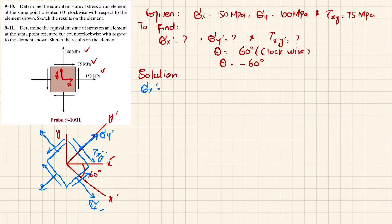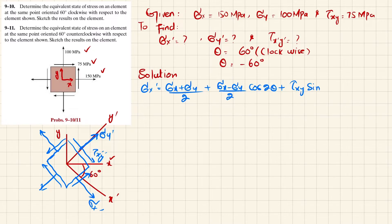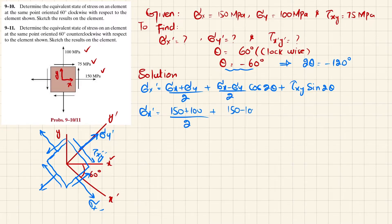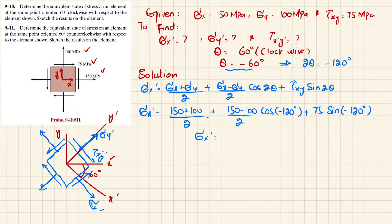We have to find sigma x dash. The formula is: sigma x dash = (sigma x + sigma y)/2 + (sigma x − sigma y)/2 · cos(2θ) + tau xy · sin(2θ). With theta = −60°, so 2theta = −120°. Substituting: (150 + 100)/2 + (150 − 100)/2 · cos(−120°) + 75 · sin(−120°). Sigma x dash comes out to be 47.5 megapascal.